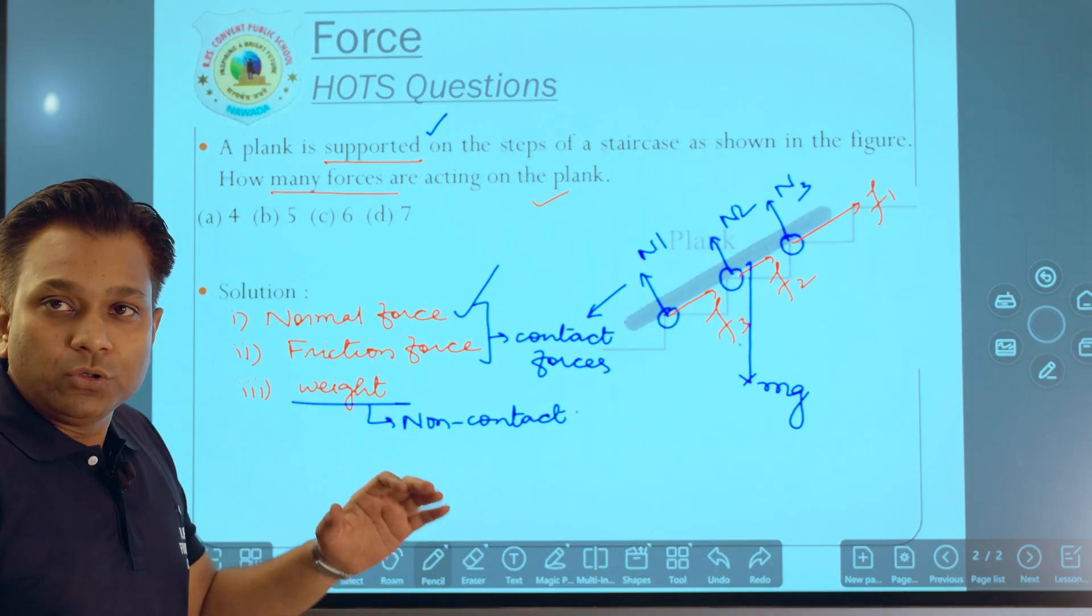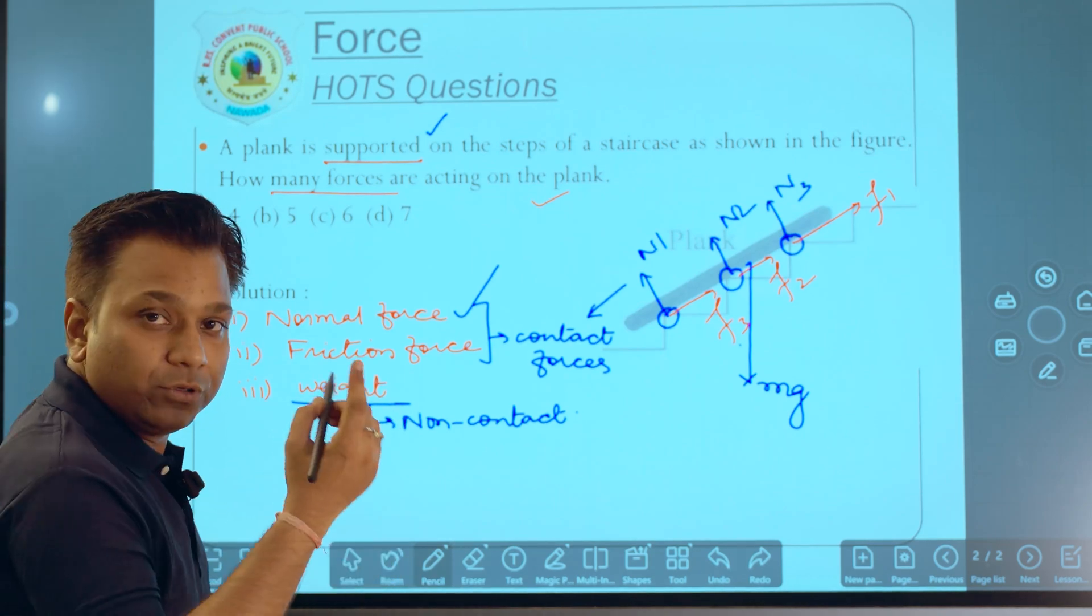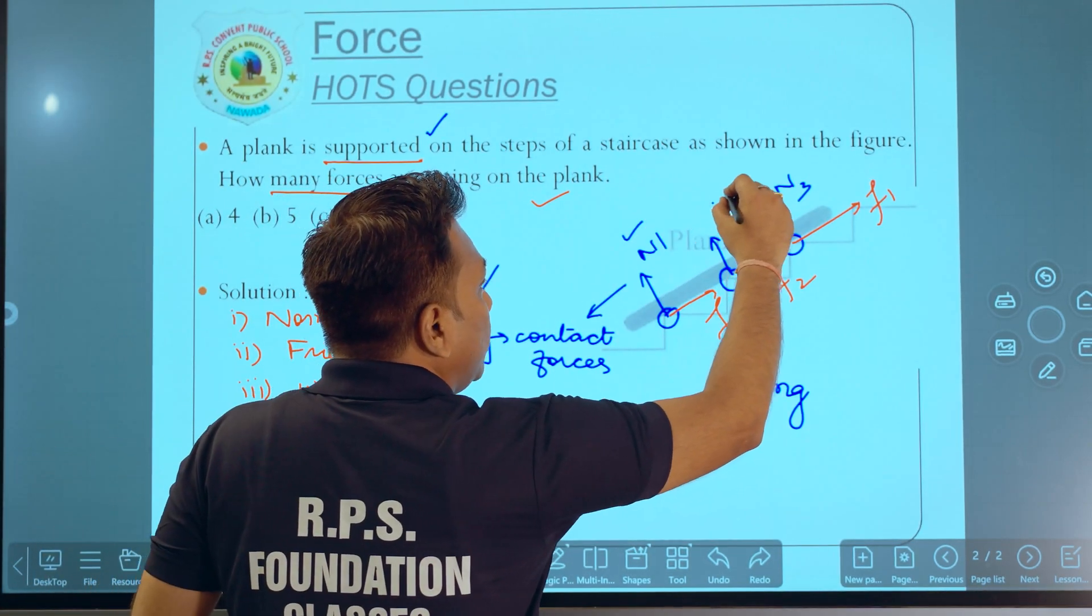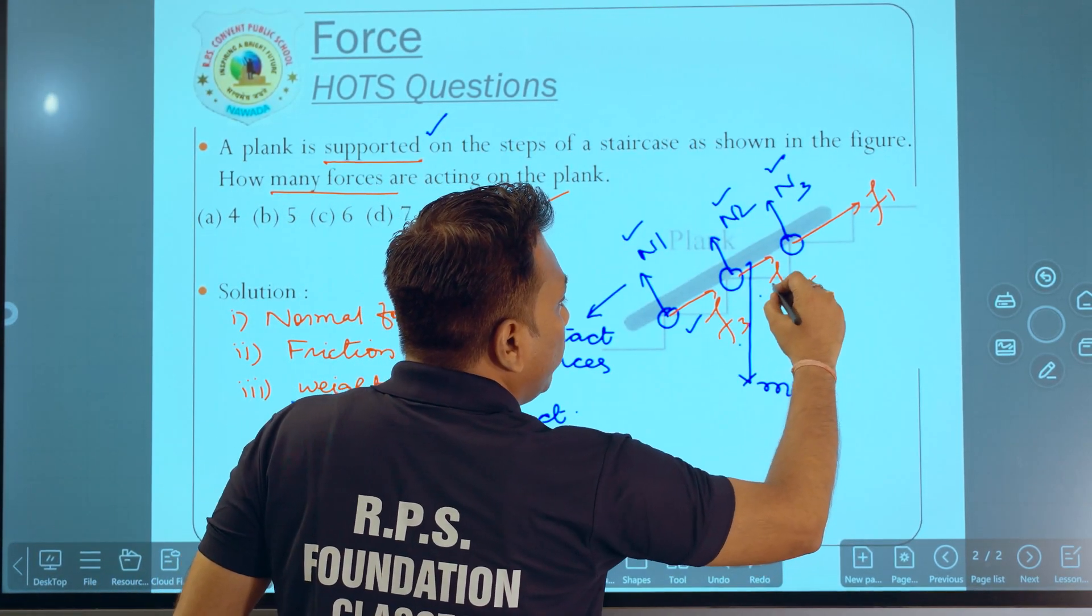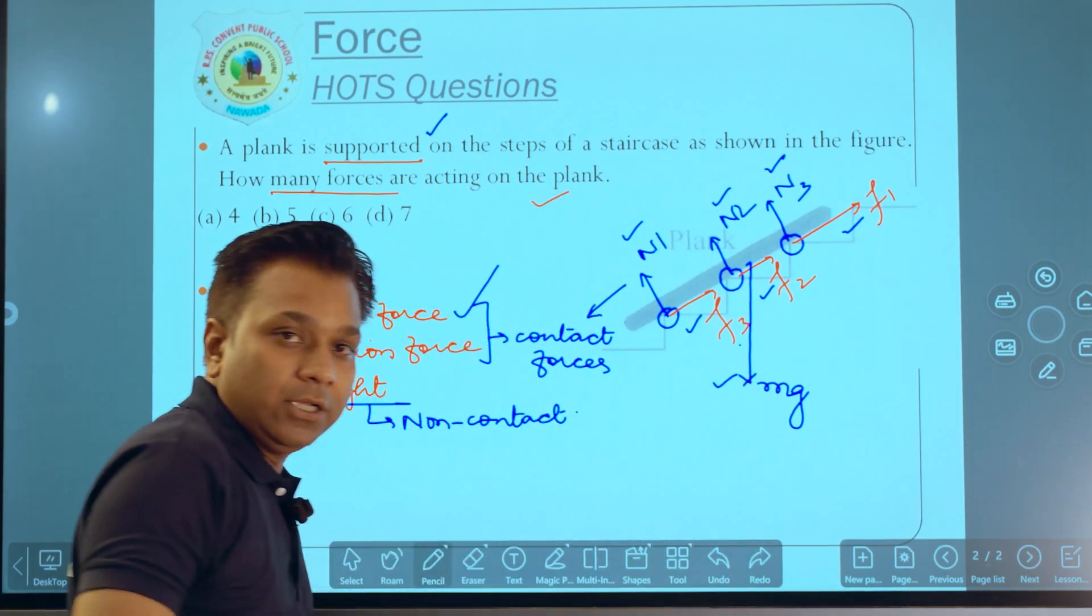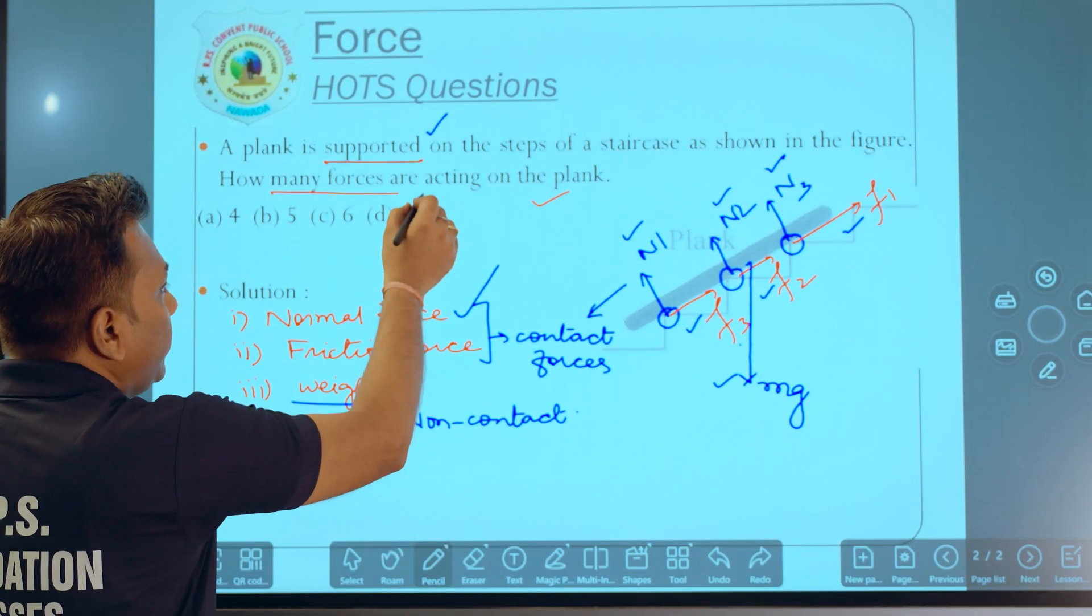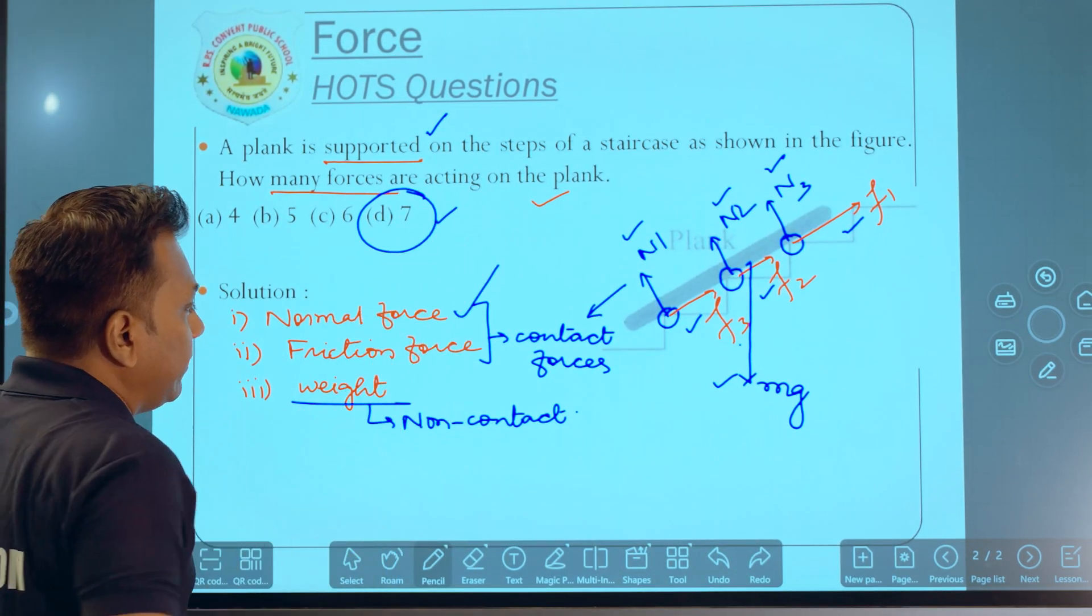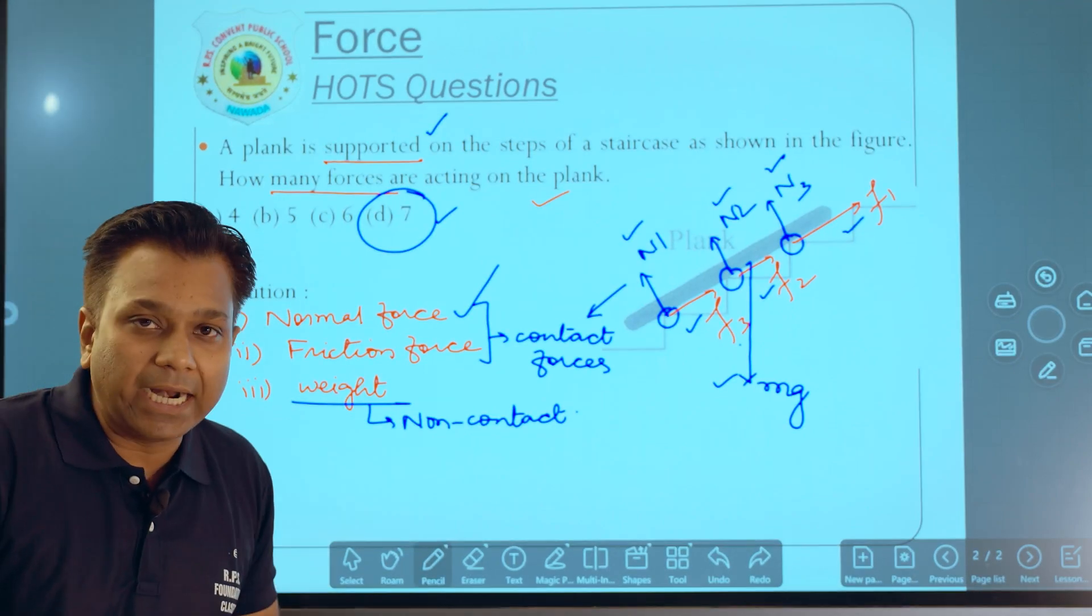So now to sum up all the forces, how many forces do we have? 1, 2, 3, 4, 5, 6 and 7. So the answer of this question will be D: 7. So in total, 7 forces are acting on it.